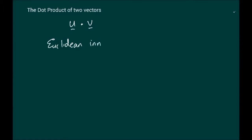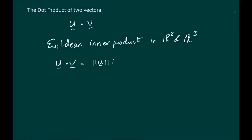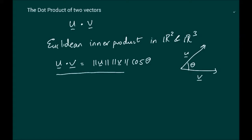The Euclidean inner product in R2 and R3 states that u dot v is in fact the norm of u multiplied by the norm of v times the cosine of theta, where theta is the angle between the two vectors u and v. So geometrically in two dimensions, if this is u and this is v, then theta is the angle between u and v. This relationship connects the two ideas — the dot product is the norm of u times the norm of v times cosine of theta.